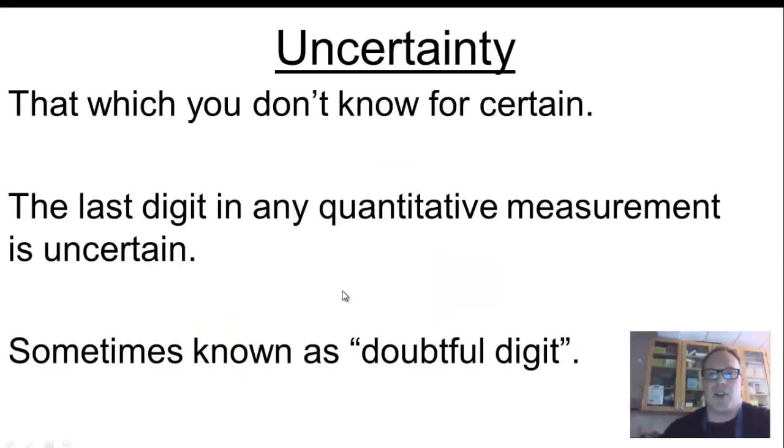Now, let's think about this term uncertain. Obviously, the definition there is that which you don't know for certain. If you're uncertain about something, you don't know something for sure. In any quantitative measurement in chemistry, what I want you to try to do is record a measurement that's precise enough so that you're estimating that last number that you're writing down. So what that means is that last number is uncertain. You might think of it as a doubtful digit.